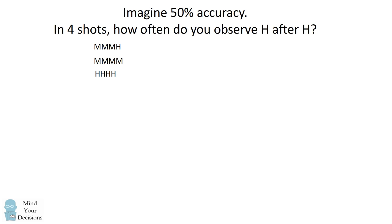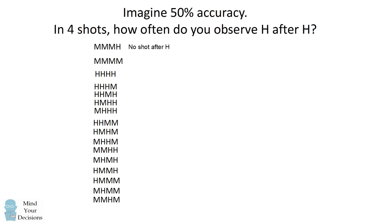So there are 16 different ways that a player can shoot with a 50% accuracy rate. And these will all be equally likely. Now in the very first observation where we have 3 misses and then a hit, there actually is no shot after the hit. So we want to know how often do you observe a shot being made after a shot already being made. In this first observation, the hit is already in the final shot so this observation doesn't matter.